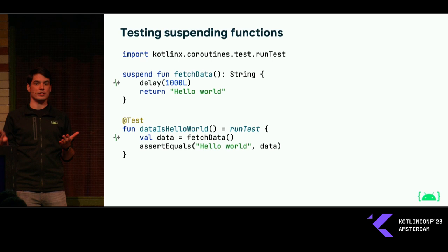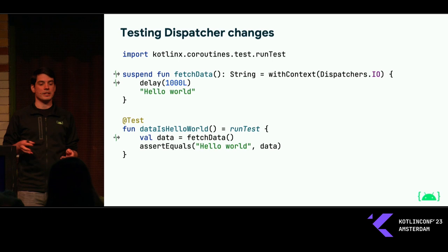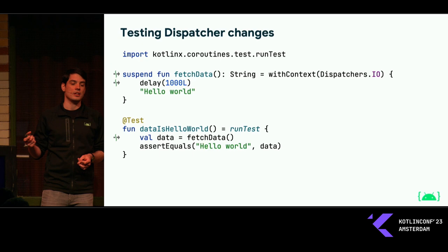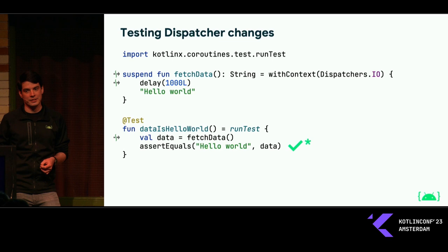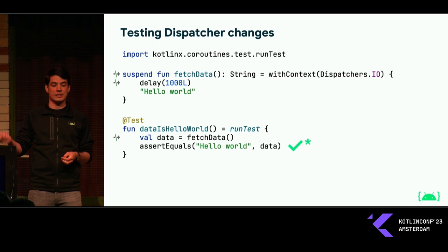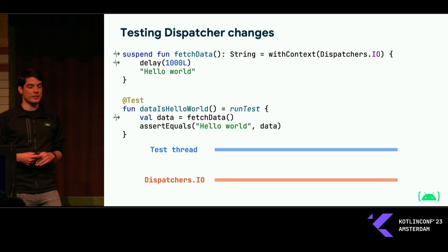What if we start complicating our coroutine code a little bit? One complication we can introduce is switching dispatchers within the code we're testing. For example, in the fetchData function, I can use withContext to go to the IO dispatcher and do the work of that function there. If we run the code again, our test will still compile and run and pass. However, we now have some problems — it will now take an actual second to run the test because the delay is now handled by the IO dispatcher.